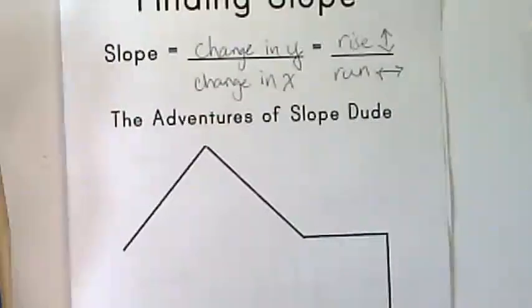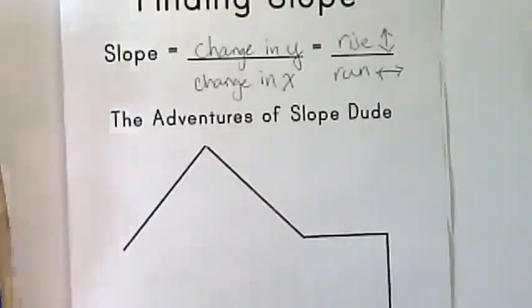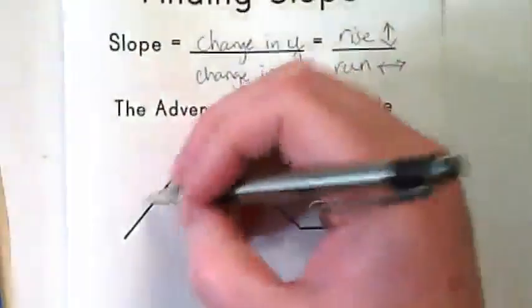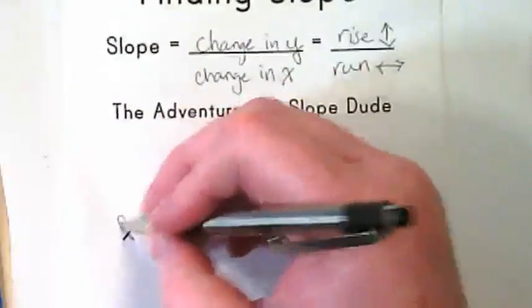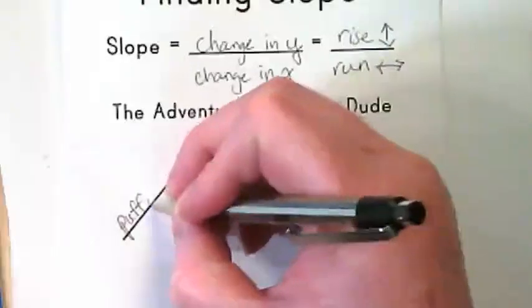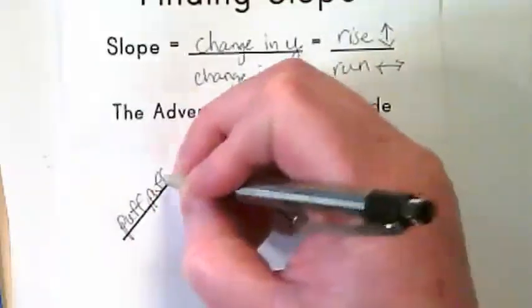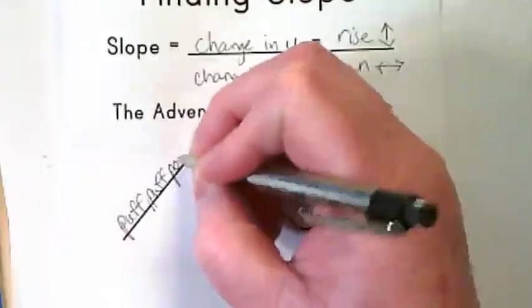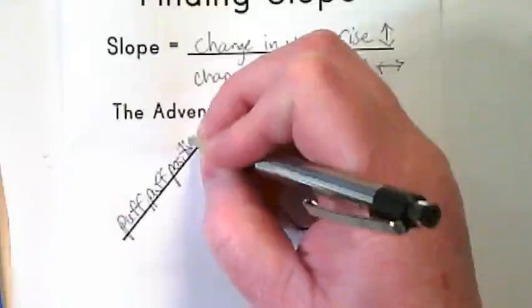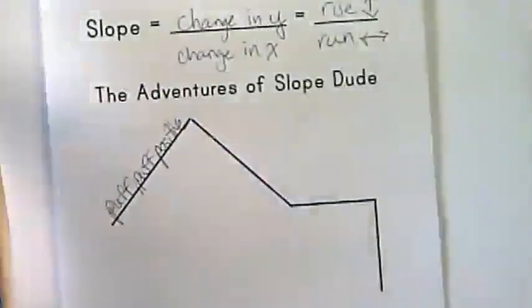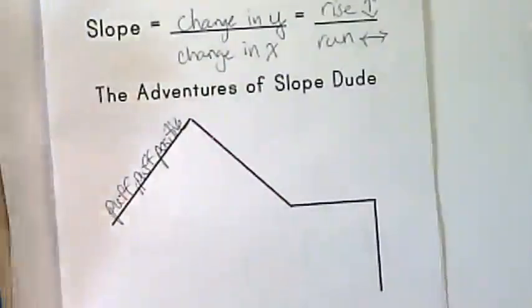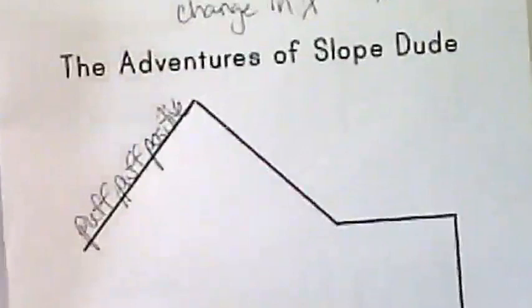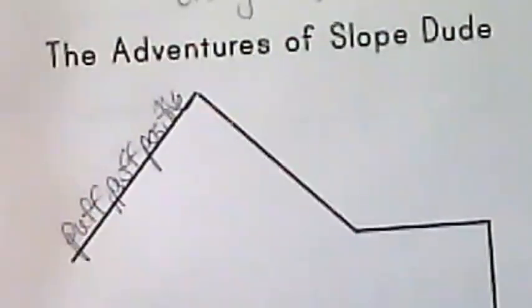Now we're going to fill in the Adventures of Slope Dude. What does Slope Dude say when he's going up his hill? He says 'puff, puff, positive.'